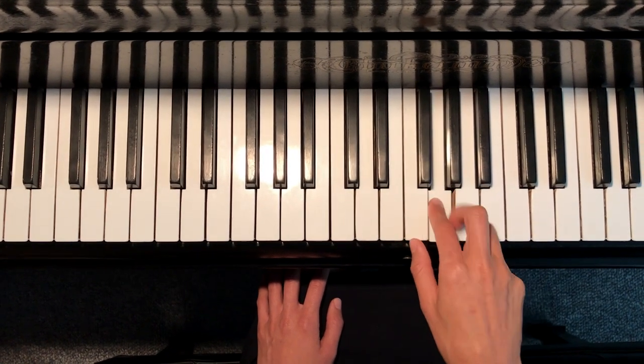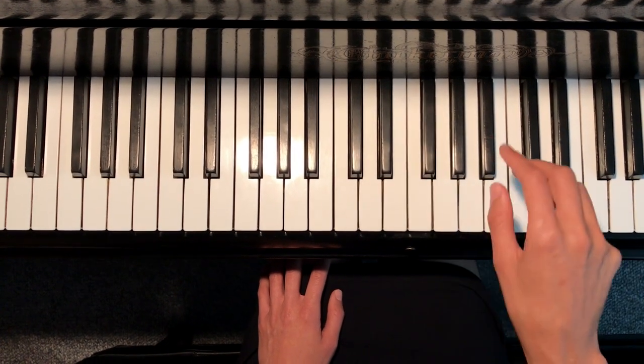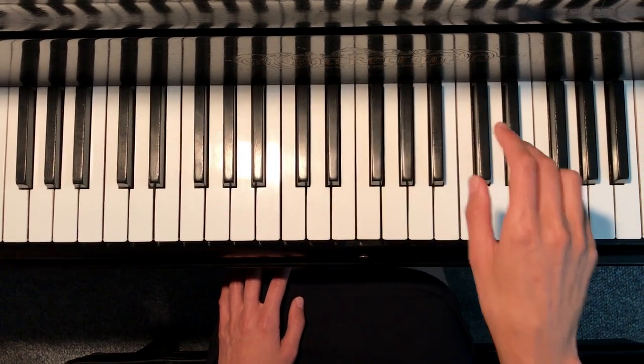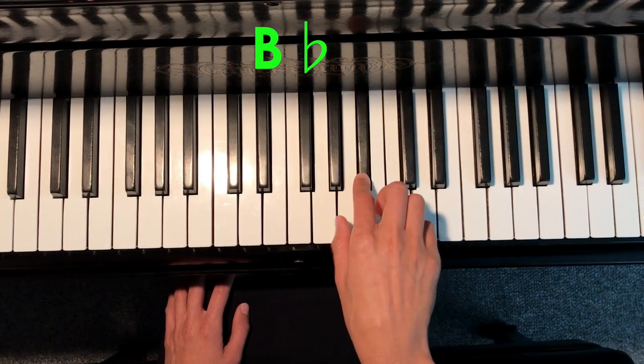If we take G and we lower it a half step, we get to G flat. If we find A and we lower it a half step, we get to A flat. If we find B and lower it a half step, we get to B flat.